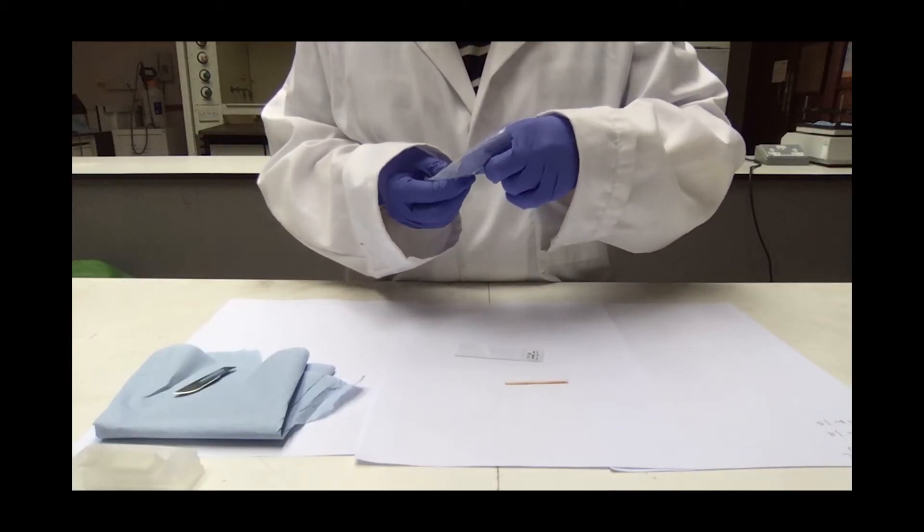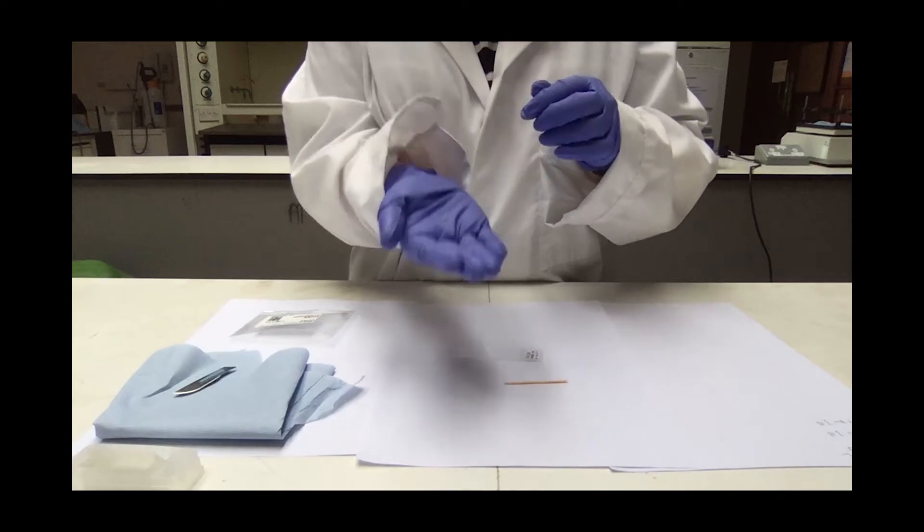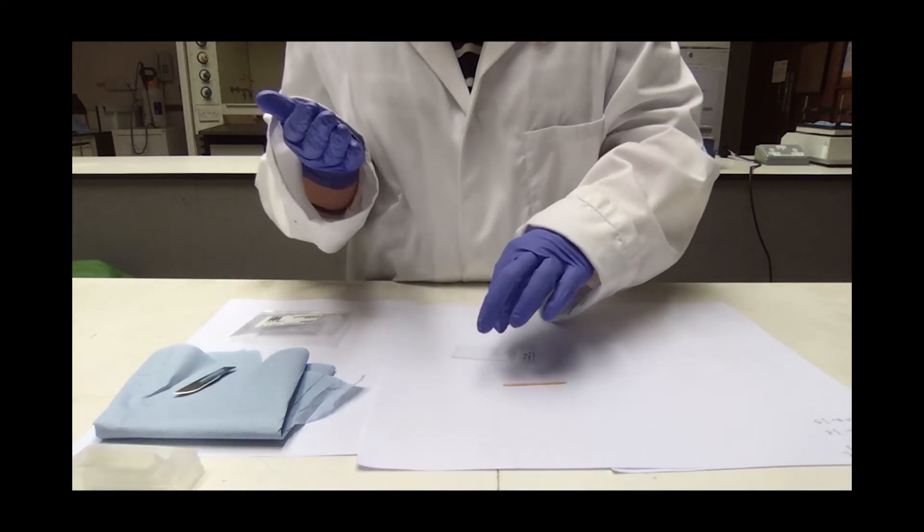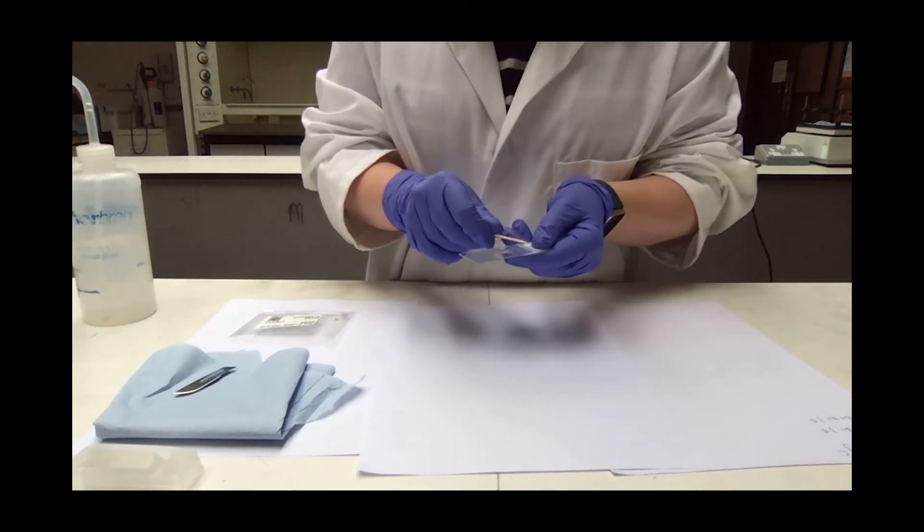To be able to see these nanofossils, we need to first get some samples. To prepare these samples, we need to be in a science lab so everything is safe. Firstly, we get a small piece of rock, put a bit of water on it and then rub it and smear it onto a glass slide.